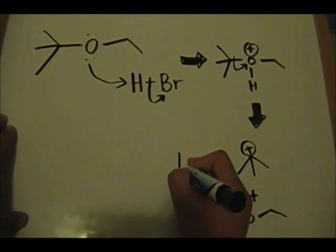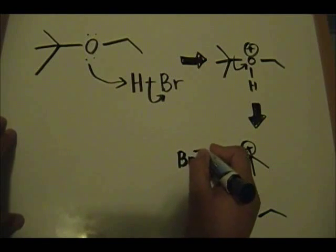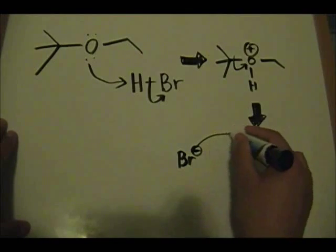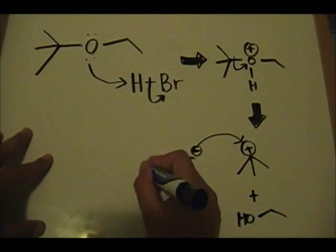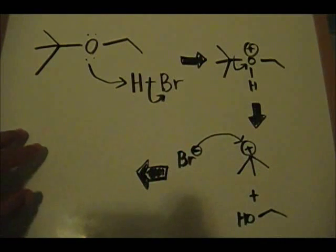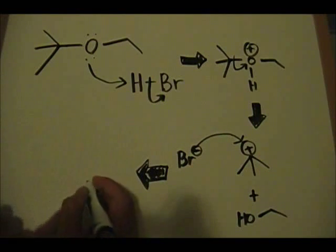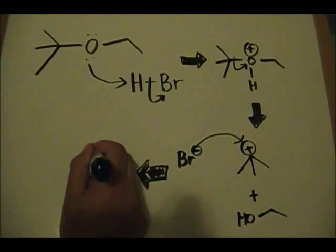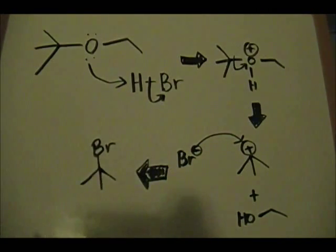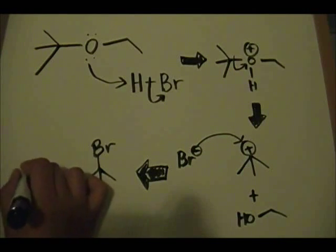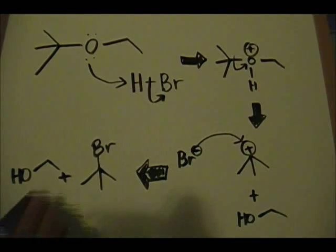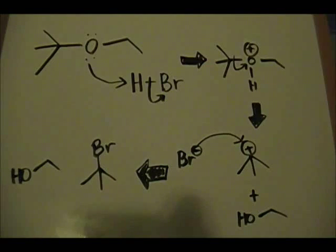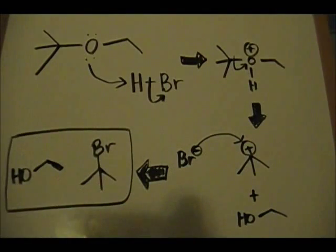Now simply what happens typical of SN1 reactions is your Br- comes now and forms the bond here. And the product you form is your tertiary alkyl halide plus your primary alcohol.